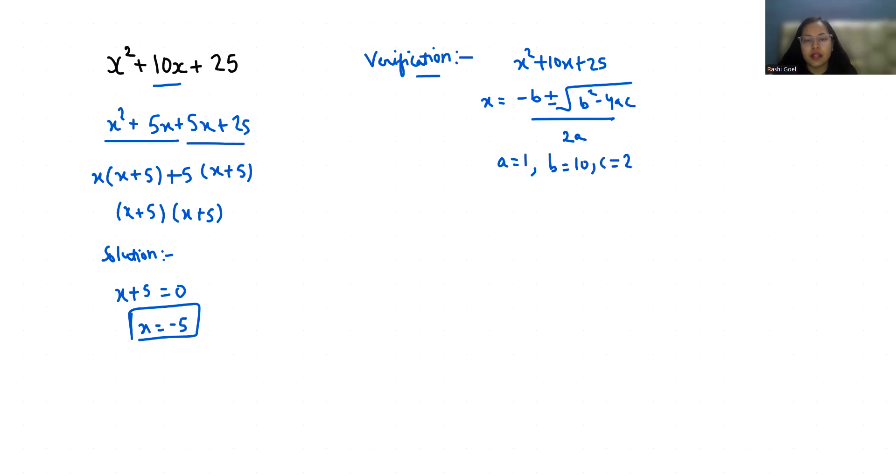So x = (-10 ± √(100 - 100)) / 2 = (-10 ± 0) / 2 = -10 / 2 = -5.